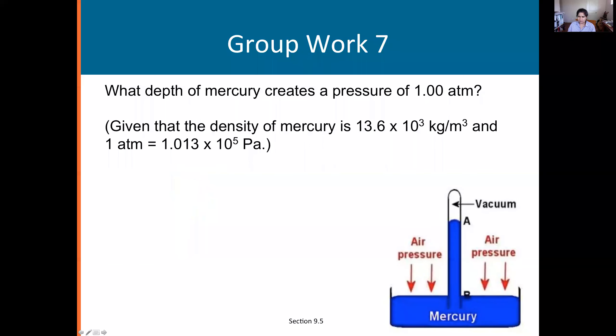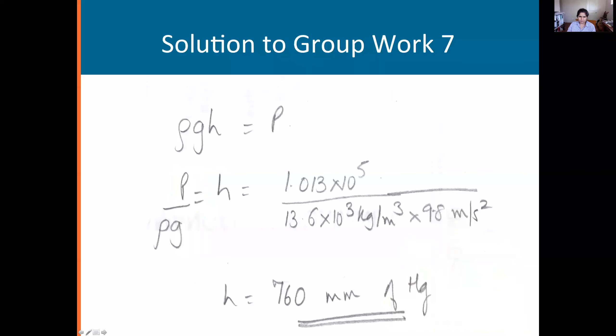The density of mercury is given here, you know g, so you should be able to calculate that height. Then compare with what I got, which is 760 millimeters of mercury. This is the symbol for mercury, Hg.